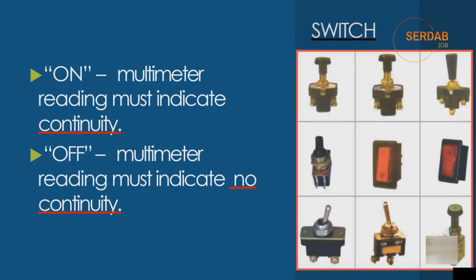Now let's cover switch testing. A switch is an element that allows current to flow or connects circuit elements together. It comes in different shapes. To test it using the continuity test on a multimeter: when the switch is ON, the multimeter probes connected to the two terminals should beep. When the switch is OFF, it should not beep. If it beeps in both states, there is a problem. If it does not beep at all even when ON, it is not working properly. This is very similar to fuse testing.